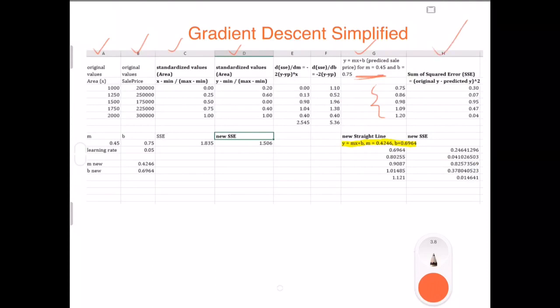Then what we did, we calculated the sum of squared error which was nothing but the original Y. So original Y is 0.20 after standardization minus 0.75 and the square. Similarly, 0.60 minus 0.86 and then you square. Whatever we got, we summed up everything and this is the total error we got: 1.835.